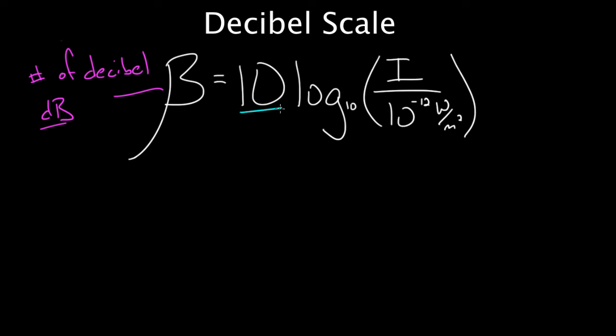This 10 just denotes the fact that this is the decibel scale and not just the bell scale. If you didn't multiply by 10, you'd have the bell scale. But this is multiplied by 10. We like the 10. We're going to call it decibel.